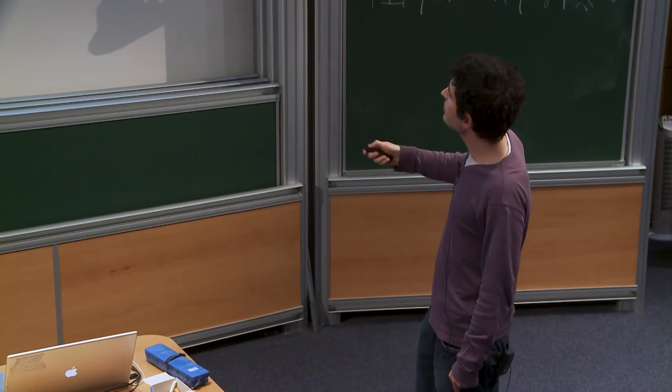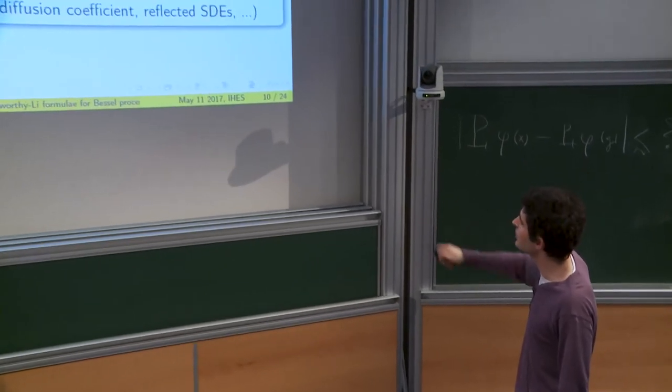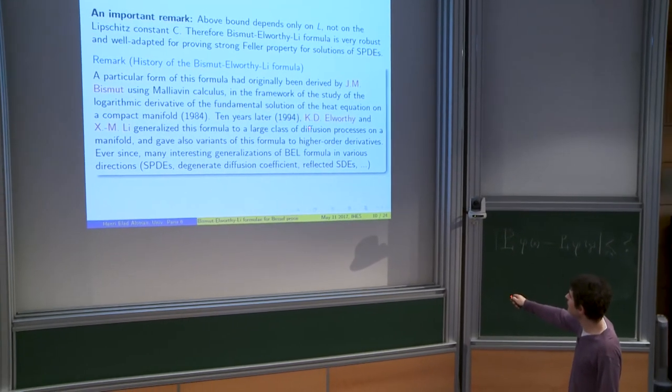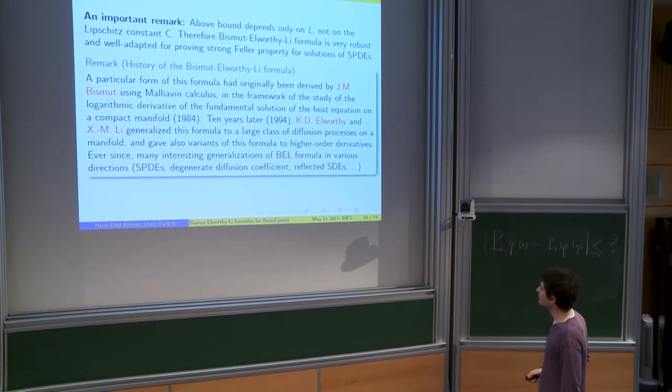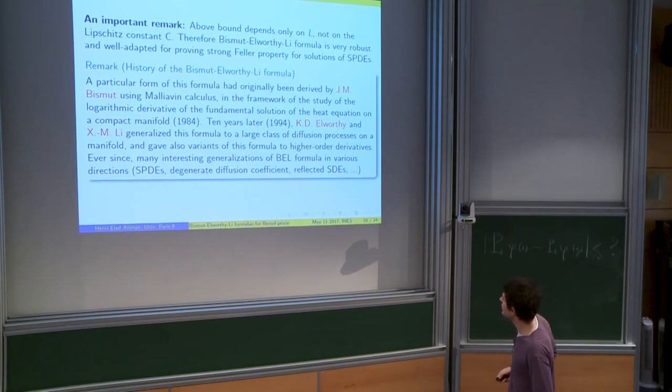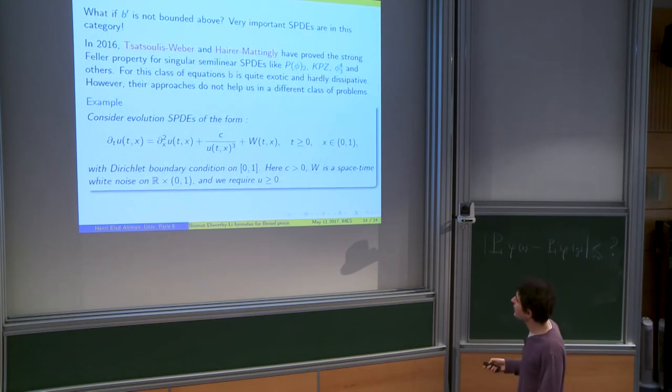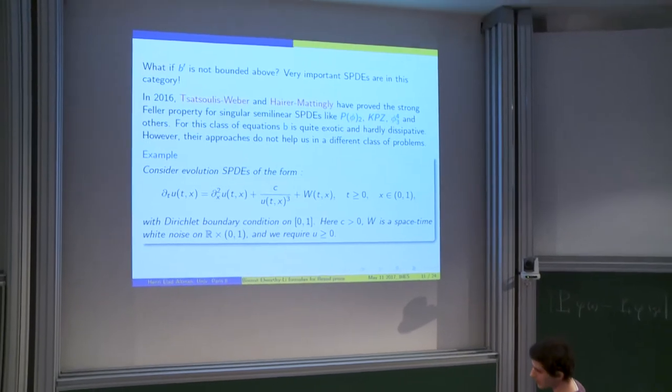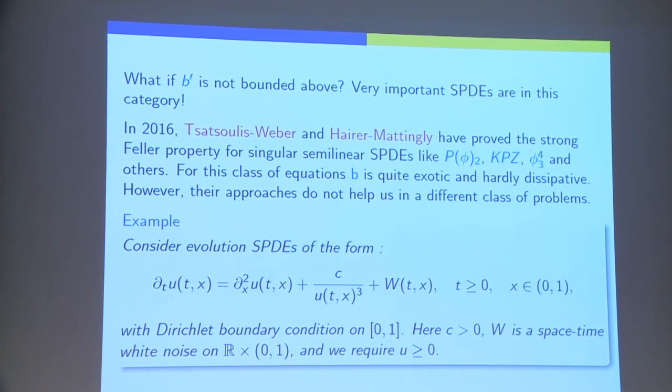The history of this formula started by formula, particular form of this formula, discovered by Jean-Michel Bismut in 1984. And, 10 years later, the formula, as I presented it to you, was derived by David Elworthy-Li and Sheu-Meili. So they proved this formula and also gave variants for higher order derivatives for the semi-group of solutions of SDEs on some manifolds. Later on, there were generalizations of this formula. But, all these generalizations were made on the assumptions, mainly that B prime was bounded. Now, the question is, what happens when B prime is not bounded above by some constant L?